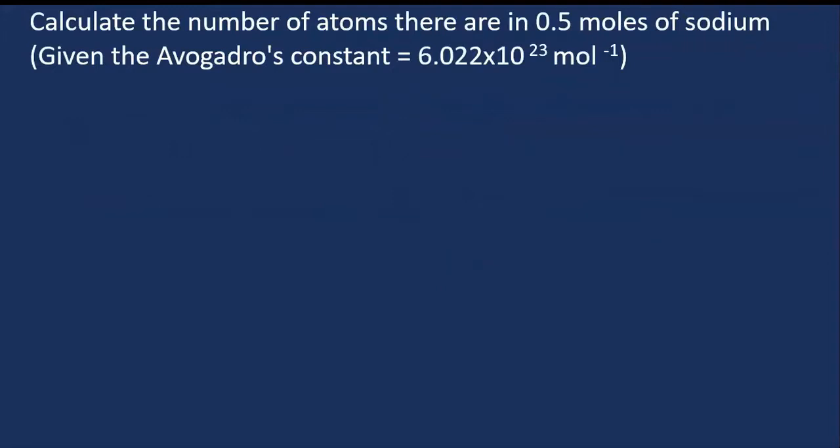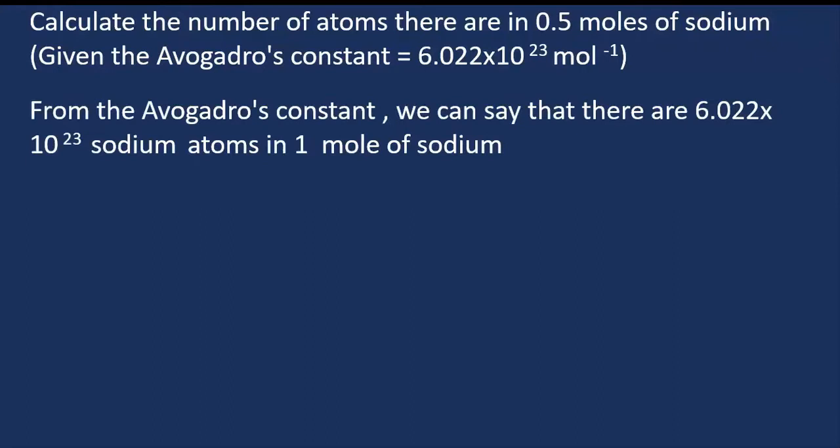Here is an example of how we can calculate the number of atoms if we're given the number of moles and the Avogadro's constant. Calculate the number of atoms in 0.5 moles of sodium, given the Avogadro's constant is equal to 6.022 times 10 to the power 23 per mole. From the question, we can see that the Avogadro's constant is equal to 6.022 times 10 to the power 23. We can say that there are 6.022 times 10 to the power 23 sodium atoms in one mole of sodium.